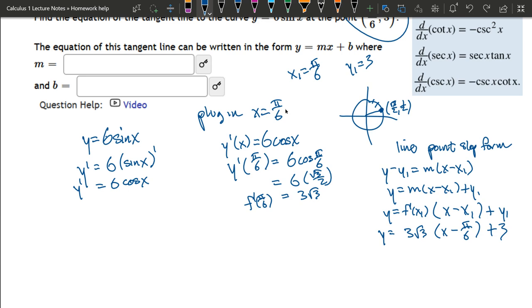One common error I see all the time: instead of using f'(x₁), people write f'(x), which is 6cos(x). When you plug that in, you don't have a line—you have a trig function, which won't be a line. This is not what you should plug in.